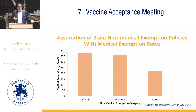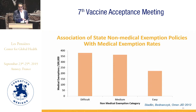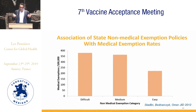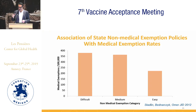Using non-medical exemption data from before the law was passed, we found that states with difficult and medium non-medical exemption categories had relatively higher rates of medical exemptions. It wasn't a total wash at the national level, but it wasn't totally unexpected. Some researchers — including our group — were already talking about the possibility of an increase in medical exemptions.